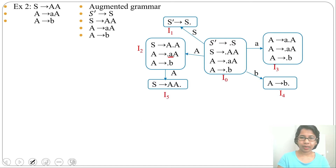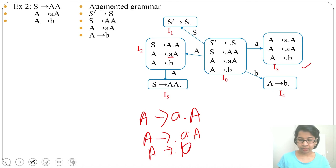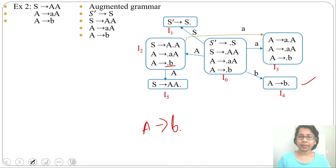From I2 by terminal a it goes to a new state with production A → a•A. There is a dot before A so we add closure: A → •AA and A → •b. This state already exists as I3, so from I2 by terminal a it goes to I3. For terminal b it goes to a state with production A → b•. That state already exists as I4, so from I2 by terminal b it goes to I4. I2 is done. We assign I2→A transition the state I5.